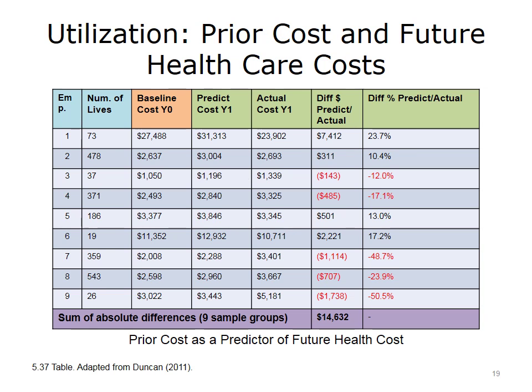This table shows how prior healthcare cost and utilization can be used for the prediction of future cost. The table lists the number of employer-based health plans, the number of members for each plan, and the baseline cost. The baseline cost is then used to predict future cost, as denoted by cost of year 1. As shown across the employer plans, prior cost is an important independent variable in predicting future cost. This model has resulted in less variation compared to the age and sex only model discussed in earlier lectures.